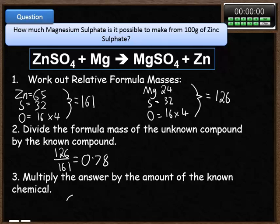I then need to multiply that answer 0.78 by the 100 grams of zinc sulfate that I started with. That works out at 78 grams of magnesium sulfate.